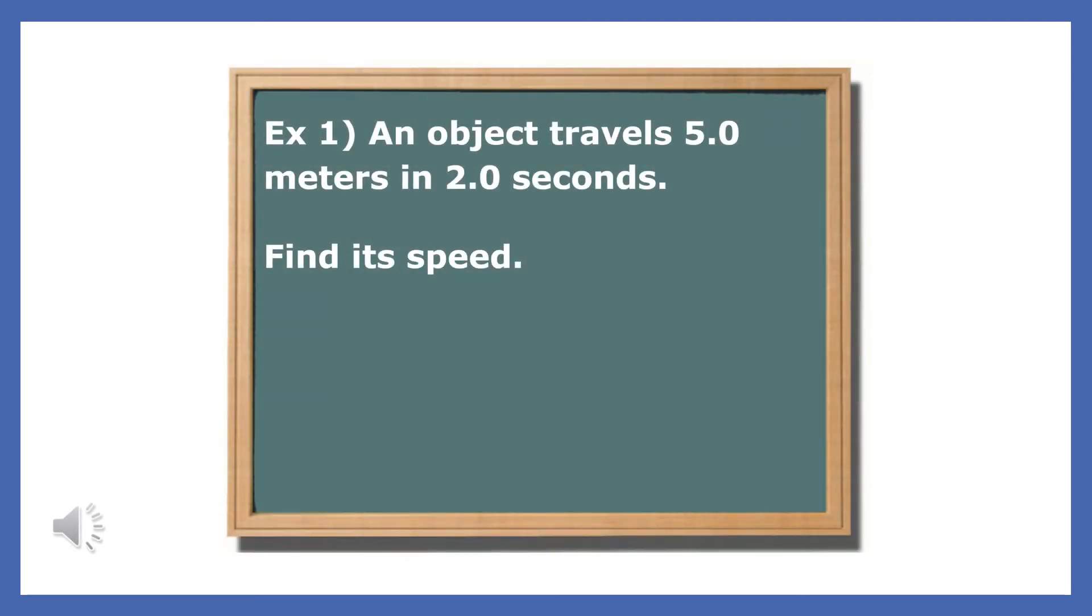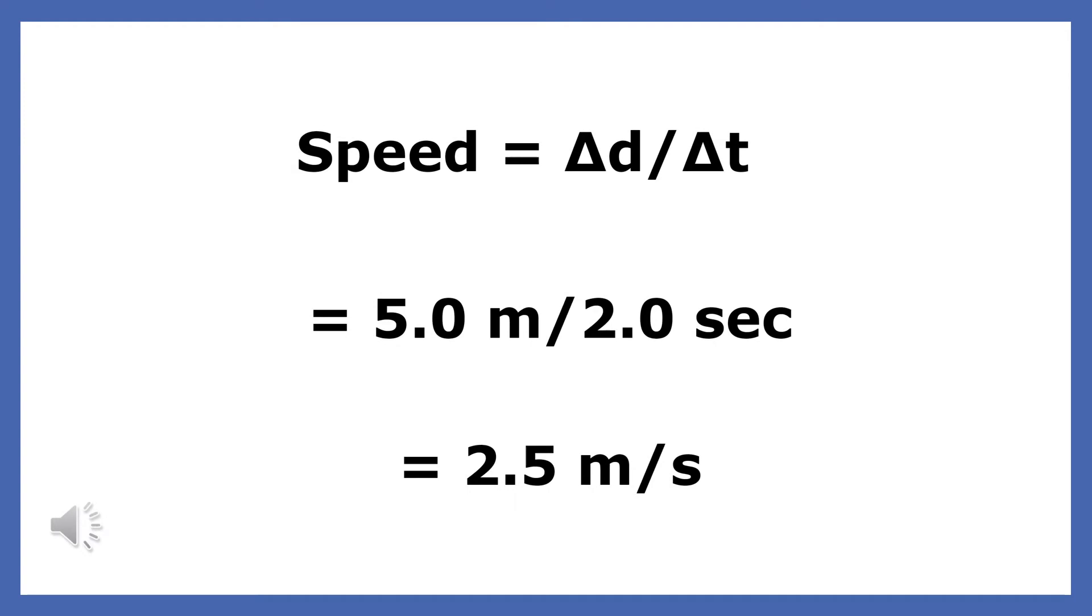Let's use the speed equation to solve a few problems. An object travels 5 meters in 2 seconds. Find its speed. This is pretty straightforward. Since the object traveled 5 meters in 2 seconds, the speed during this time interval is 2.5 meters per second. This is about the speed of a fast walk.